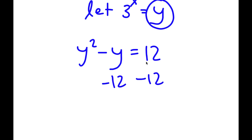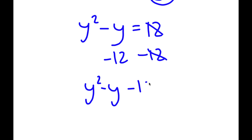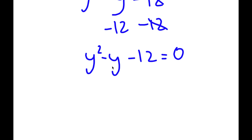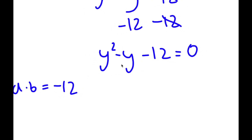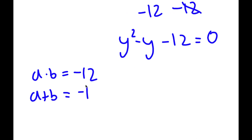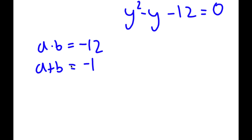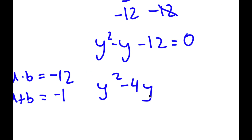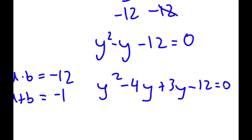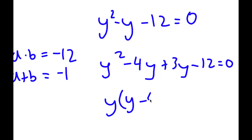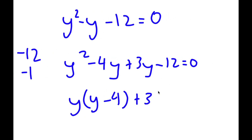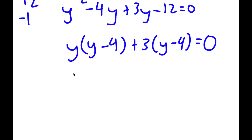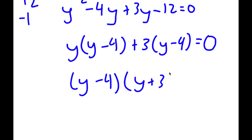Now I'm going to subtract 12 on both sides, so I get y squared minus y minus 12 is equal to 0. To factor this, we have to find two numbers that multiply to get negative 12 and add to get negative 1. Negative 4 and 3 work because negative 4 times 3 is negative 12 and negative 4 plus 3 is negative 1. So I have y squared minus 4y plus 3y minus 12 is equal to 0. Factoring out y from y squared minus 4y, and factoring out 3 from 3y minus 12, I get y times y minus 4 plus 3 times y minus 4 is equal to 0.